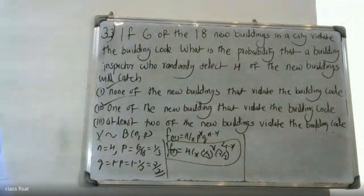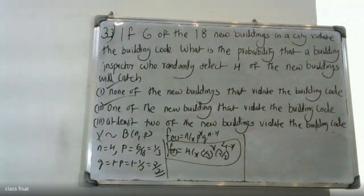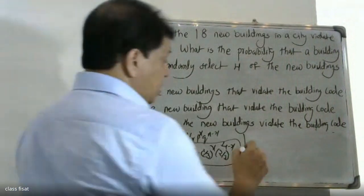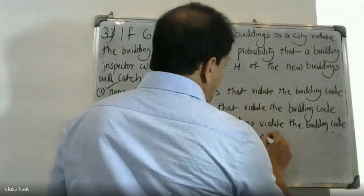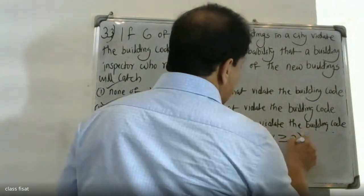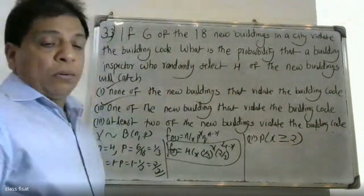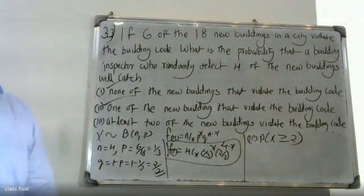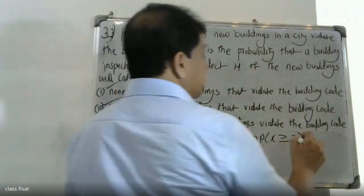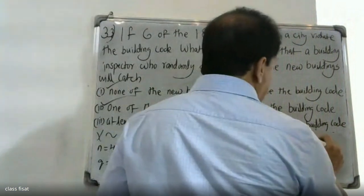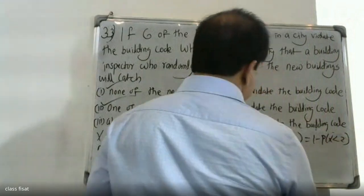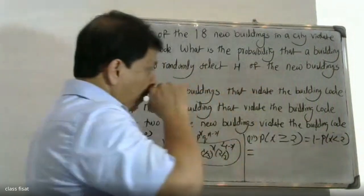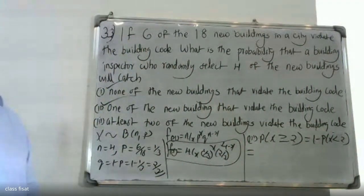For the third question, at least two of the new buildings violate the building code. The probability of x greater than or equal to 2 equals 1 minus the probability of x less than 2, which is 1 minus the probability of x less than or equal to 1.